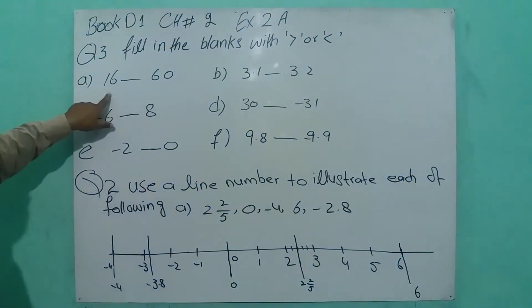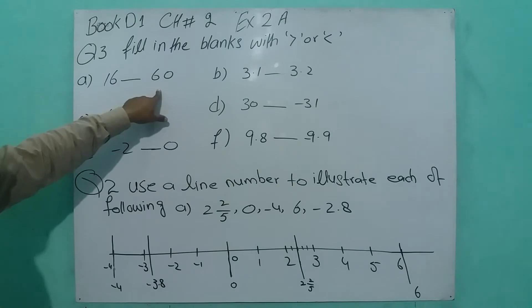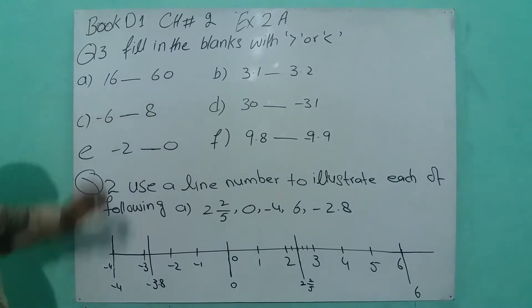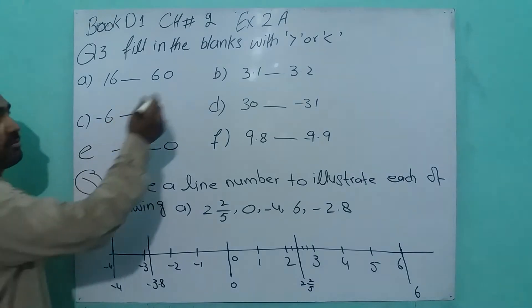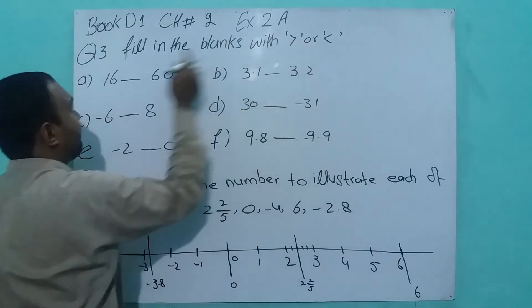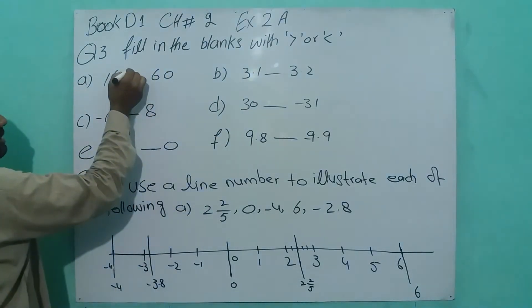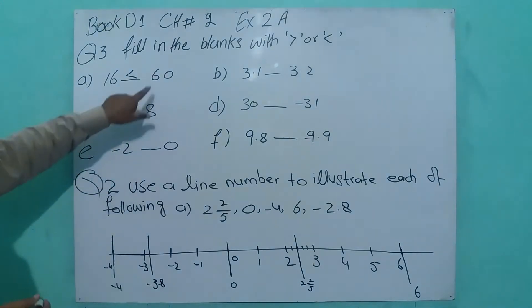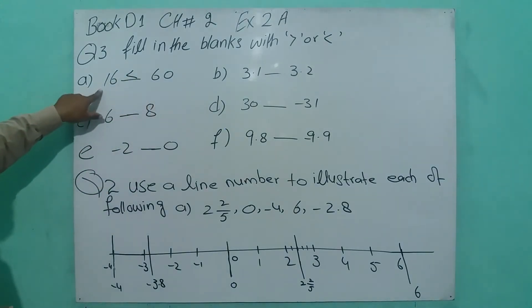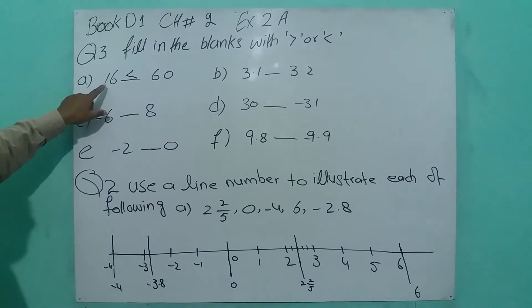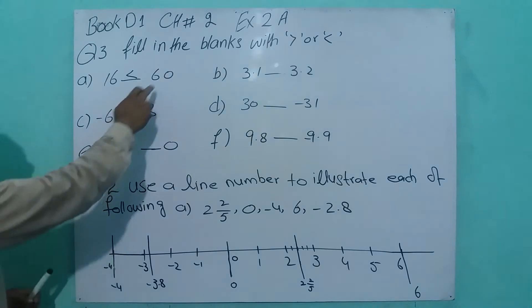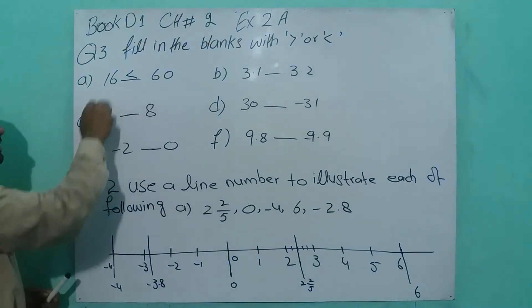This is 16 and this is 60. Which is greater? The open side faces the greater number. 60 is greater, 16 is smaller. It means we read as: 16 less than 60, and 60 is greater than 16.